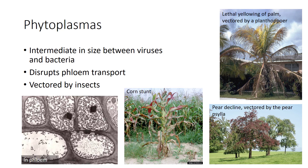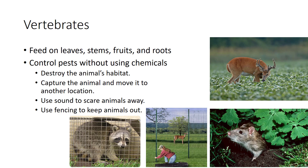Both small and large animal pests cause crop damage by feeding on leaves, stems, fruits, and roots of plants. For some types of animals — rodents — the use of pesticides is legal. However, it is illegal to use pesticides on some other animals, such as deer. Understanding the law is important for deciding which alternatives must be sought. Ways to control vertebrate pests without using chemicals include: destroying the animal's habitat, capturing the animal and moving it to another location, using sound to scare animals away, and using fencing to keep the animals out.